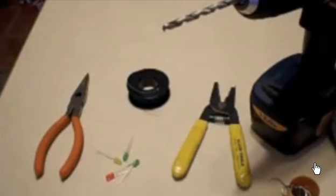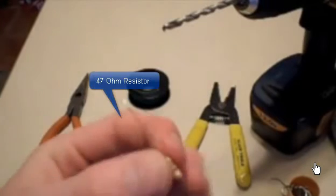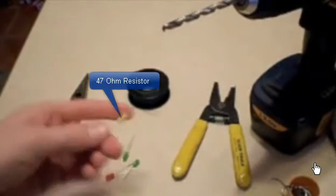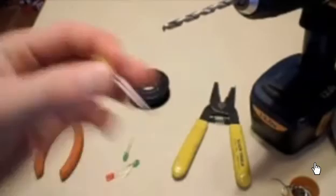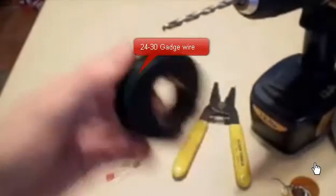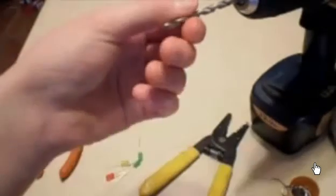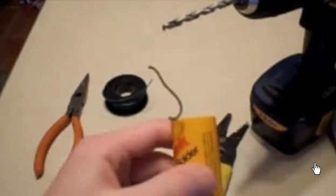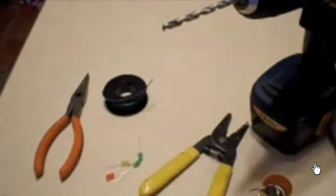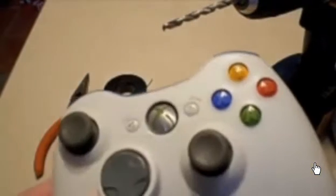First off, you're going to need a couple things. You're going to need a 47 ohm resistor, a couple of LEDs with two prongs, some wire, wire cutters, a screw gun, solder, a soldering iron, and the Xbox 360 controller.